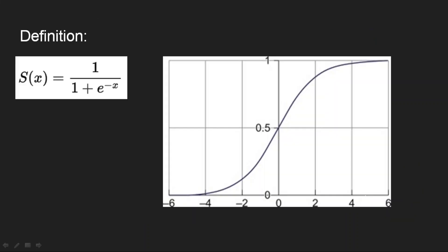The sigmoid function is defined as 1 divided by (1 plus e to the power of minus x). Looking at its graph, the output is always between 0 and 1. If the input is minus infinity the output is 0, if it is plus infinity the output is 1, and all in-between values fall somewhere between 0 and 1.